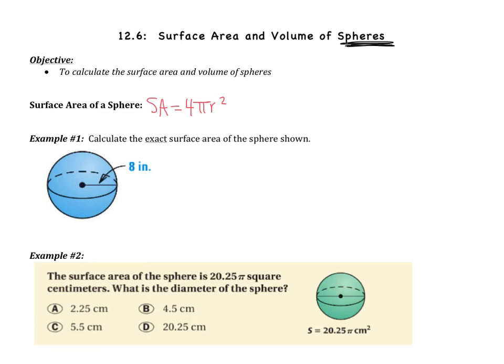So let's do example number one. It says calculate the exact surface area of the sphere shown. So I'm going to start with a formula. My surface area is 4 pi r squared. So I have 4 pi times 8 squared. Now I need to think about order of operations. What comes first? Parentheses.